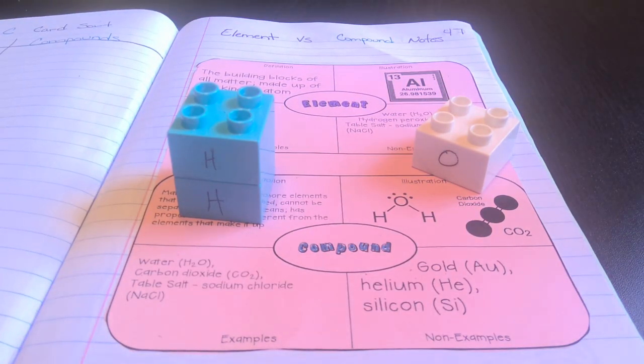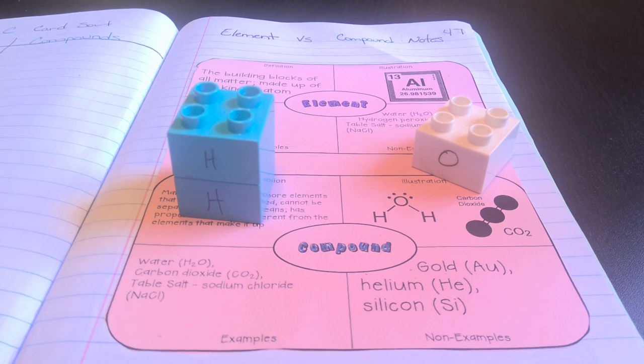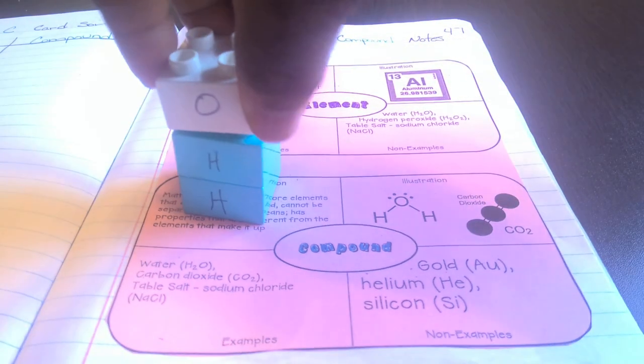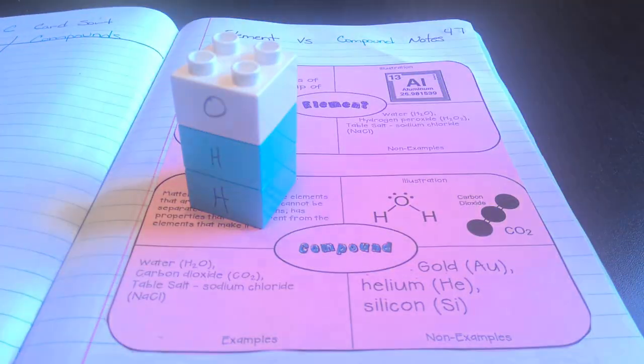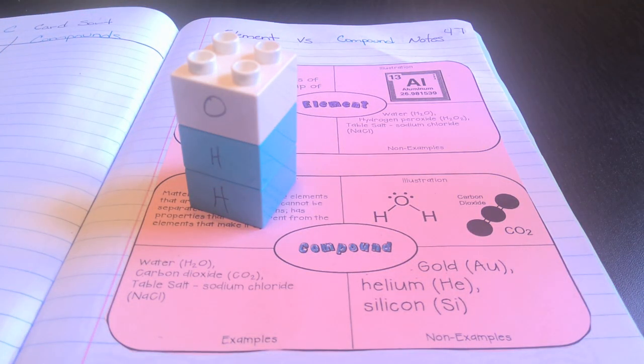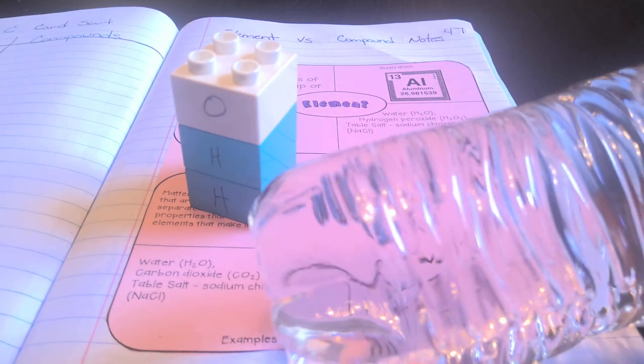If we chemically bond the hydrogen and the oxygen elements, we form a compound which is matter made up of two or more elements and it cannot be separated by physical means. So H2O, when we bring two hydrogens together with an oxygen, we get water.